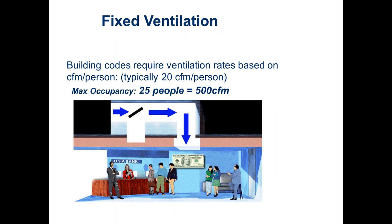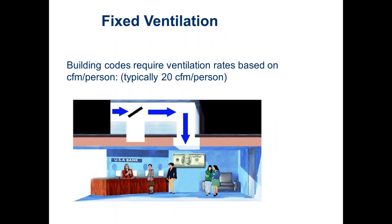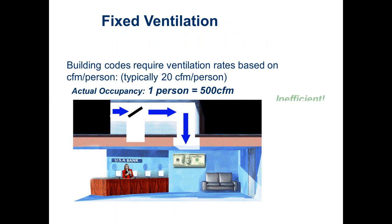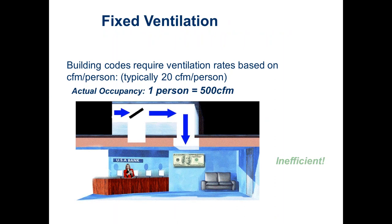In a typical building based on 20 CFM per person, if we had 25 people designed to be in a space, we'd have to bring in 500 CFM of outside air. But later in the day with only five people, we'd still bring in 500 CFM. At night with just one person, we'd still be bringing in 500 CFM. The building and system have no idea how many people are in there, hence it doesn't know how much outside air to bring in — it always brings in the code-required design amount. That's what we need to change.